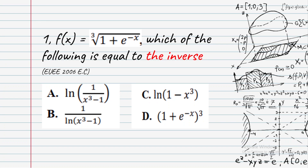Other options include: ln in the bracket 1 minus x cubed, or ln in the bracket 1 plus e to the power of x — the whole cubed. Let's work through this step by step.